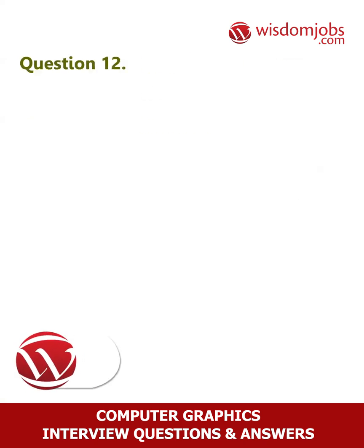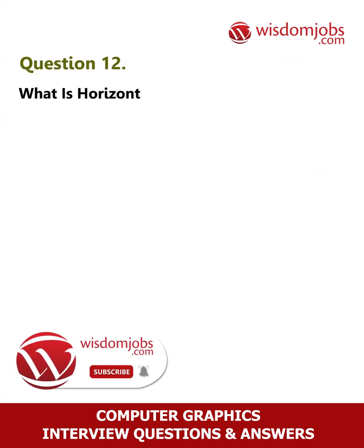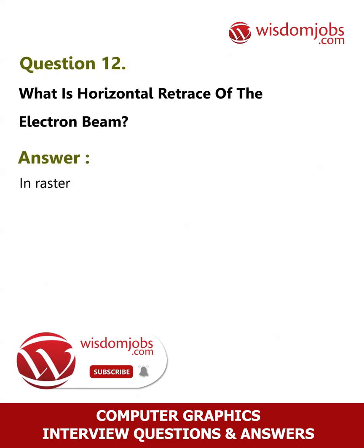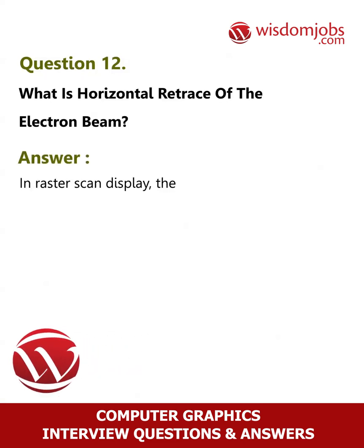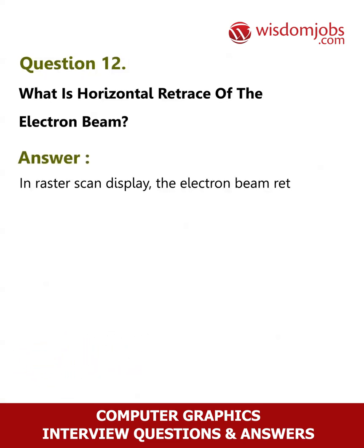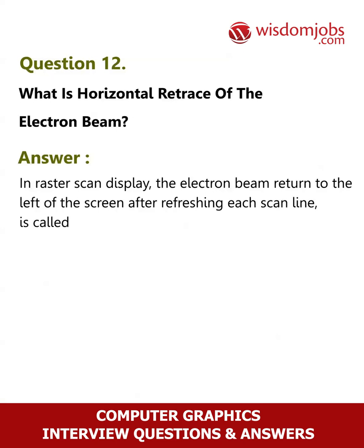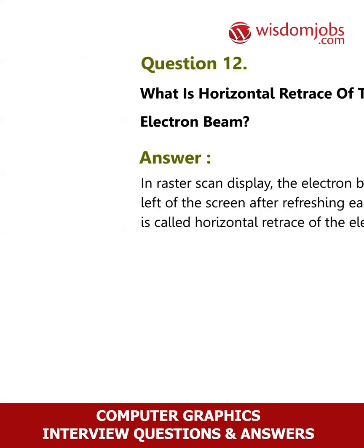Question 12: What is horizontal retrace of the electron beam? Answer: In raster scan display, the electron beam returned to the left of the screen after refreshing each scan line is called horizontal retrace of the electron beam.